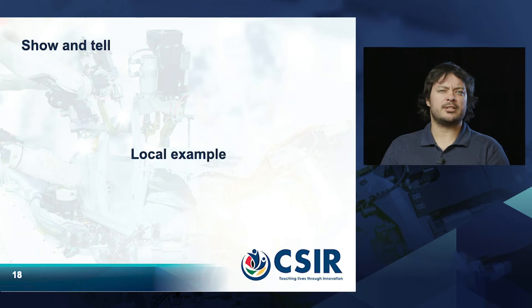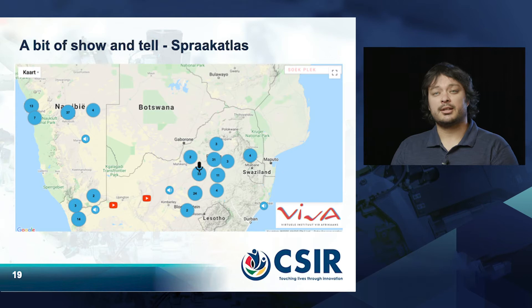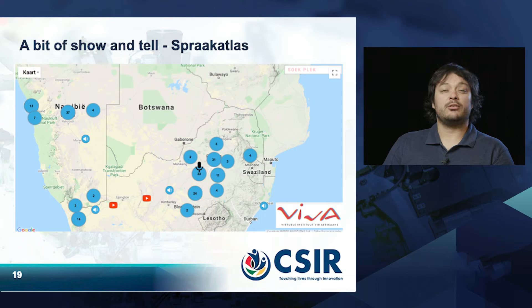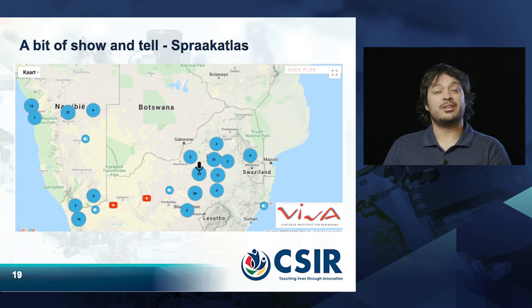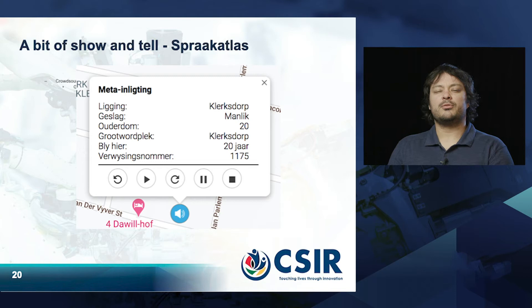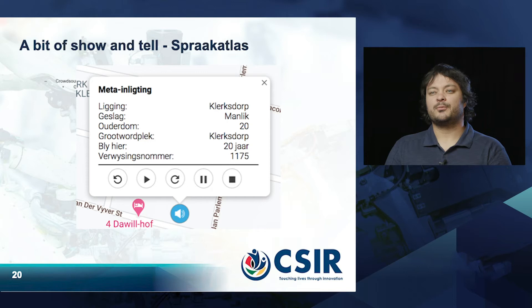Moving to show and tell: a local example called Sprakatlas was developed by the Virtual Institute for Afrikaans. This platform provides users with the ability to record an Aesop fable called The North Wind and the Sun. In Afrikaans, the narration of that fable allows researchers to do very specific phonology research, while users can also see how different parts of the country speak different dialects of Afrikaans. It provides an insight into how research and the community can come together on a specific platform.